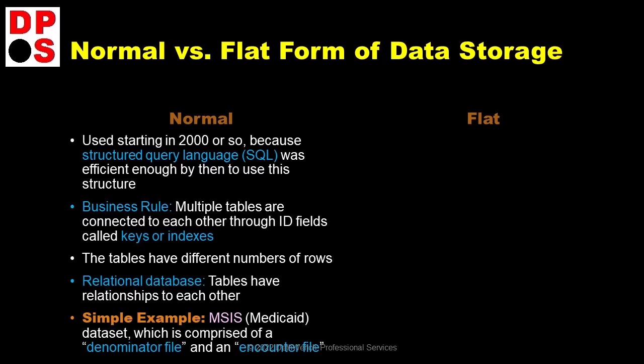Normal form started getting popular in about the year 2000, and this was mainly due to technological advancement. Structured query language, known as SQL, had already been contemplated and invented, but it didn't work very well before 2000. That's because it is based on a structure with a lot of different tables connected by keys or indexes. If you want to join a bunch of tables when you execute a query, you are going to need a lot of technological power, and we just didn't have that power until about 2000.